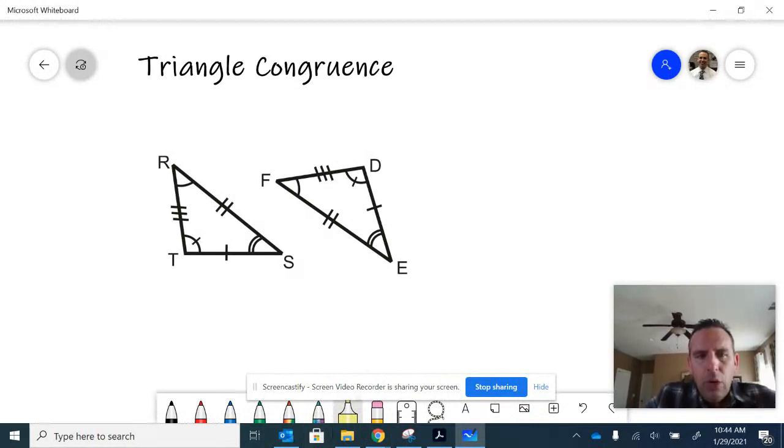For example, angle R on the first triangle has one mark. Angle F on the second triangle has the same marking.